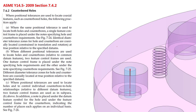Now as far as the standard that supports this: go to ASME Y14.5-2009 — it's also in the 2018 and previous standards — but Section 7.4.2 in the 2009 standard outlines this theory. Where positional tolerances are used to locate coaxial features such as counterbore holes, the following practice applies: where the same positional tolerance is used to locate both holes and counterbores, a single feature control frame is placed under the notes specifying the hole and counterbore requirements, just like we saw in our example.